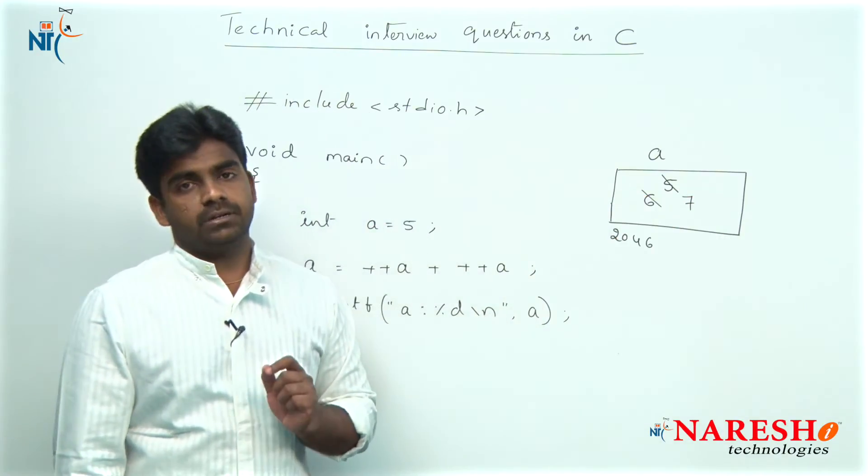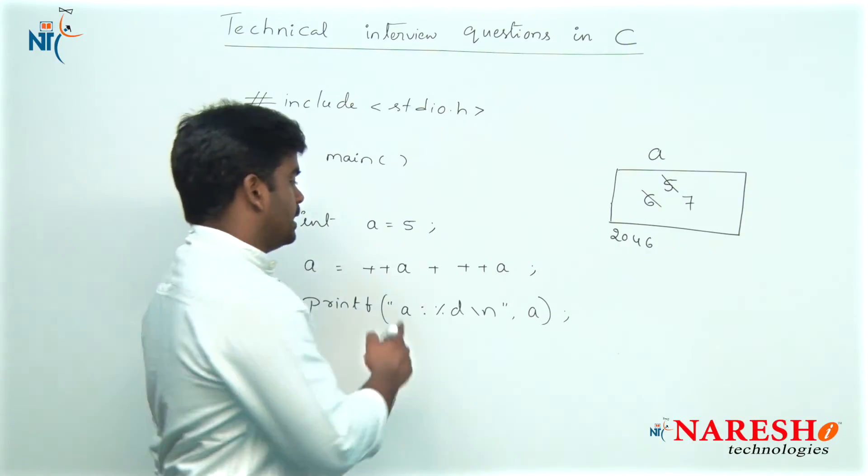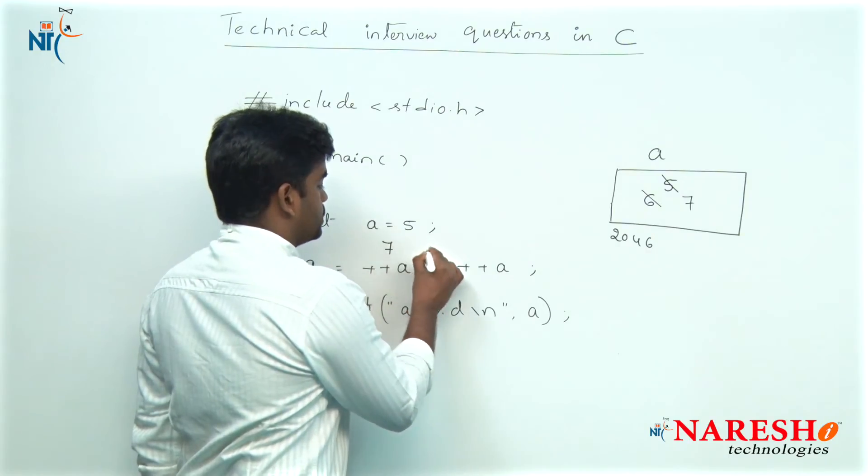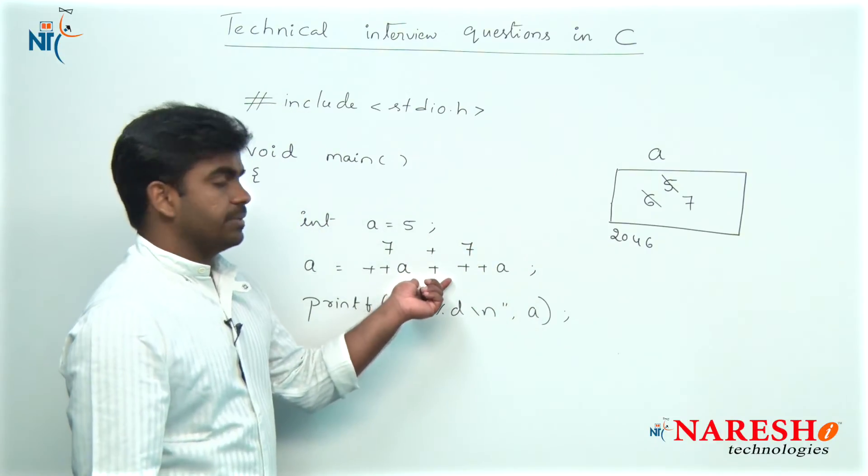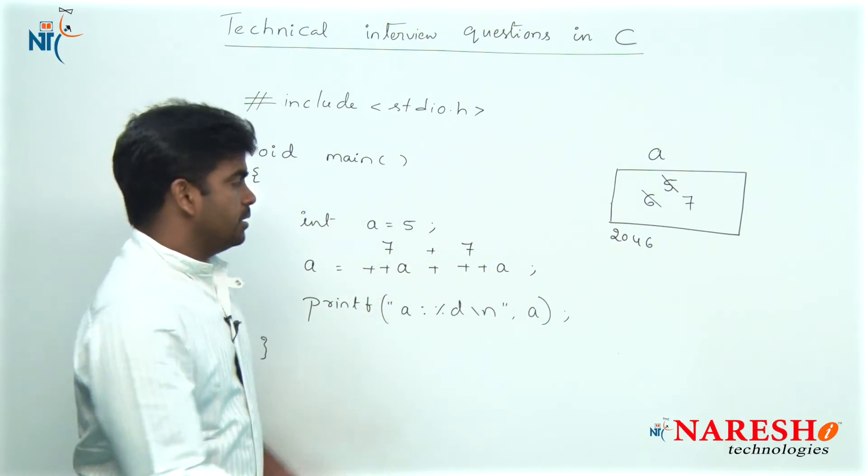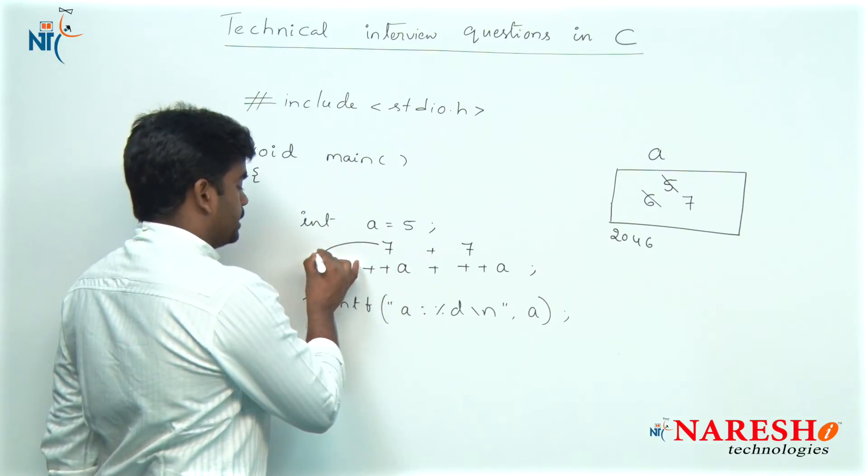A value is 7, there is no 5, there is no 6. So directly you should substitute 7 and 7 here, 7 plus 7, the value is 14. The 14 will be stored into a.